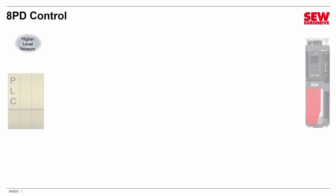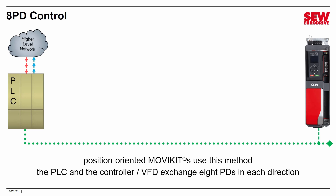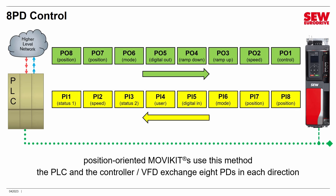There's also an 8PD mode, commonly used with positioning-oriented MoVC kits that need extra process data words. The first five POs match 5PD — control word, speed, ramps, and digital outputs. PO6 selects the positioning mode, and PO7 and PO8 carry the target position. On the return side, PI1 through PI5 match 5PD, PI6 indicates which mode the VFD is in, and PI7 and PI8 carry the current position. Additional classes covering field bus control in more detail may be offered in the future.